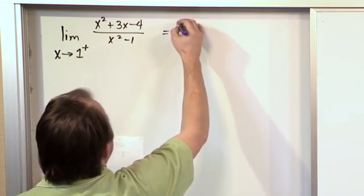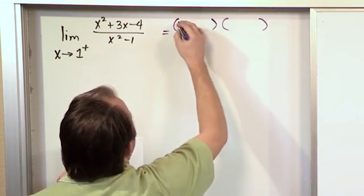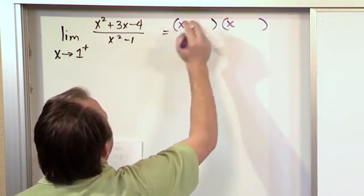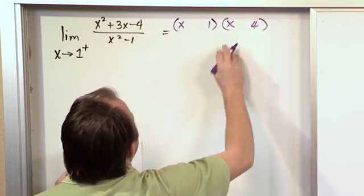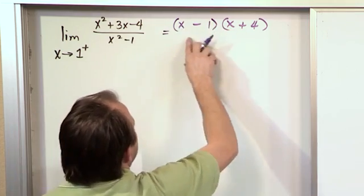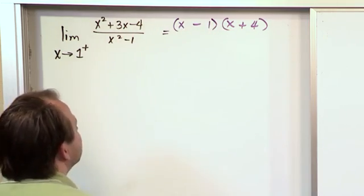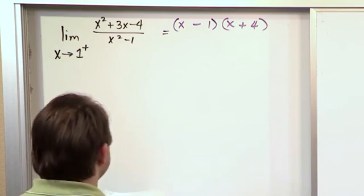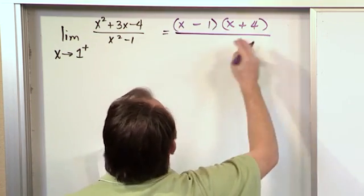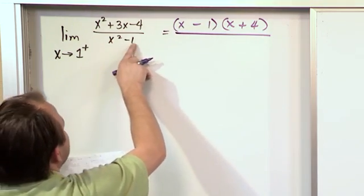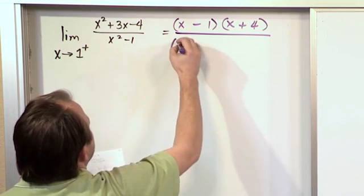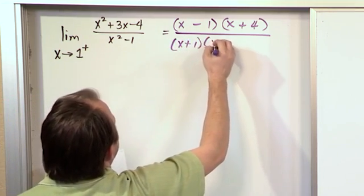On the top, what we're going to have is x and x, and for 1 times 4 makes 4, so we'll have a plus and a minus. As we multiply these guys and subtract, we'll get our 3 in the middle and our negative 4 over there. On the bottom, we will see that this is the difference of two squares because here we have 1 squared. So this is x plus 1, x minus 1.